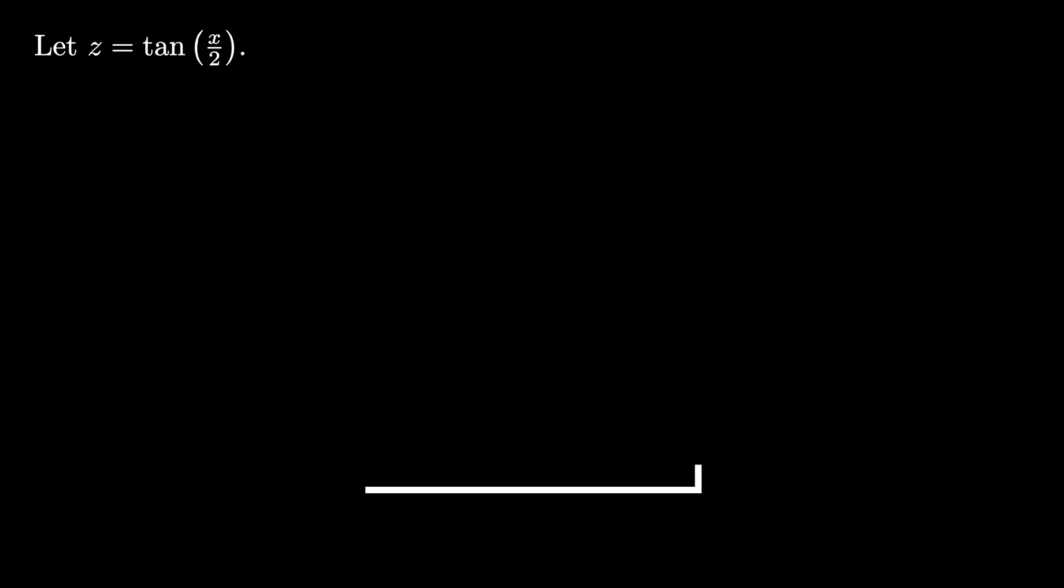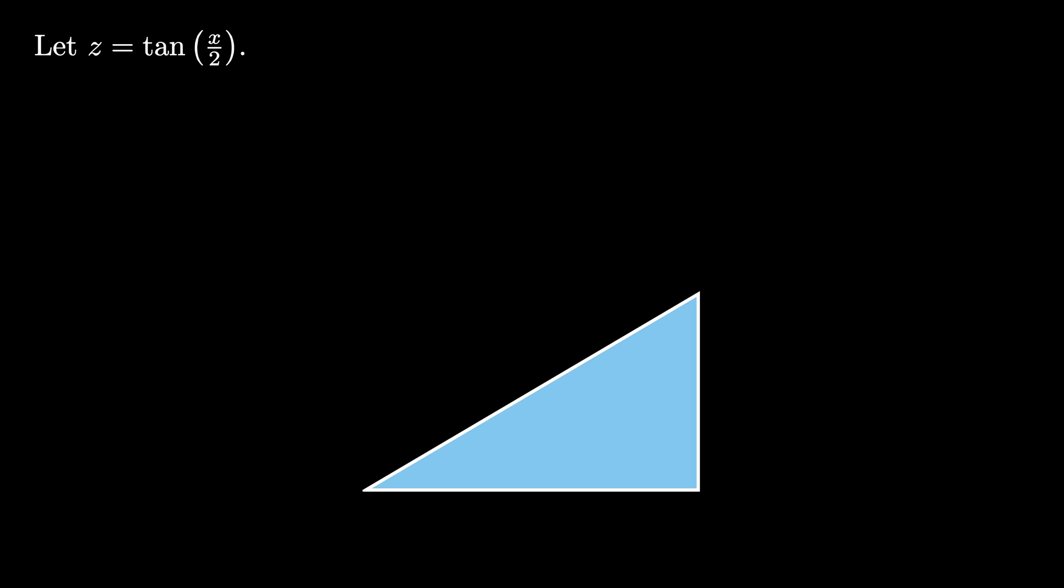We let z be the tangent of x over 2. This means there exists a right triangle with sides of length 1 and z, and the angle opposite to z is x over 2. According to the Pythagorean theorem, the hypotenuse on this triangle is the square root of 1 plus z squared.